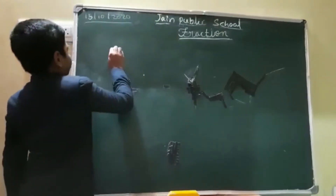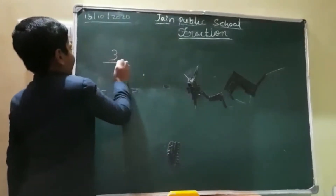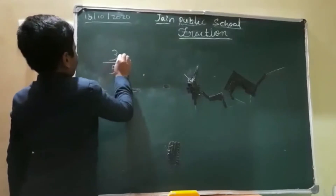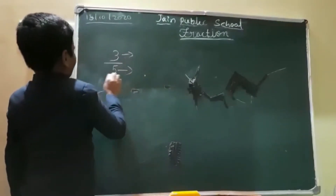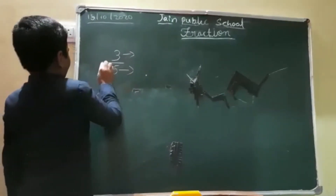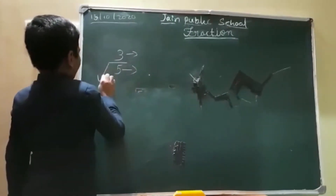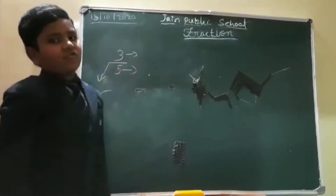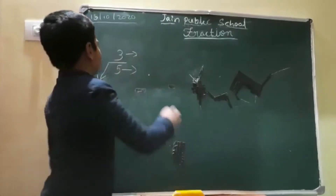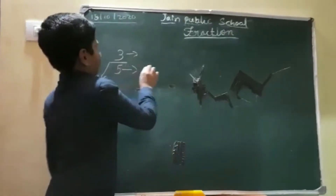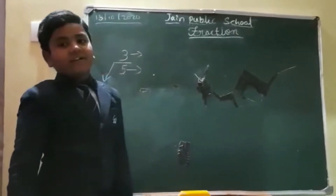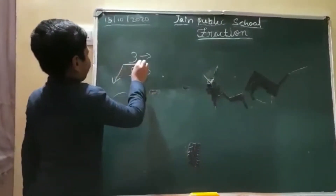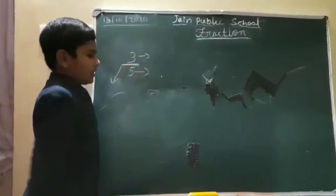For example, 3 by 5. Here, 3 is called the numerator and 5 is called the denominator. And this line is called the fraction bar.